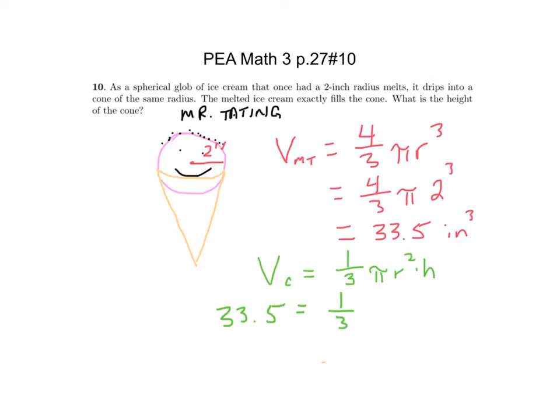So the volume of the cone is going to also be 33.5 equals one third pi. The radius is the same, so the radius is two, times the height and we're solving for h. Alexa, does the ice cream being partly in the cone already have anything with the volume? No, no, once it melts it'll take over that volume.